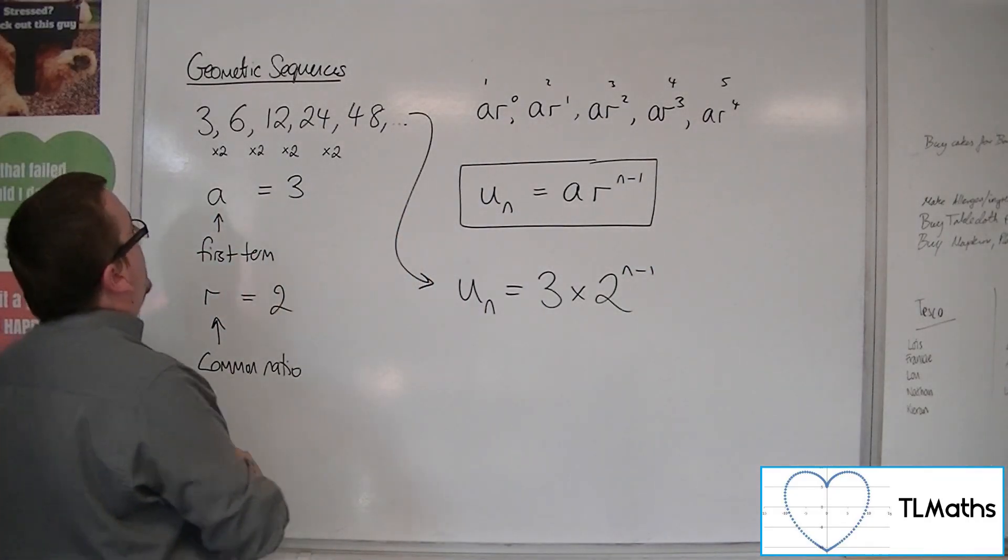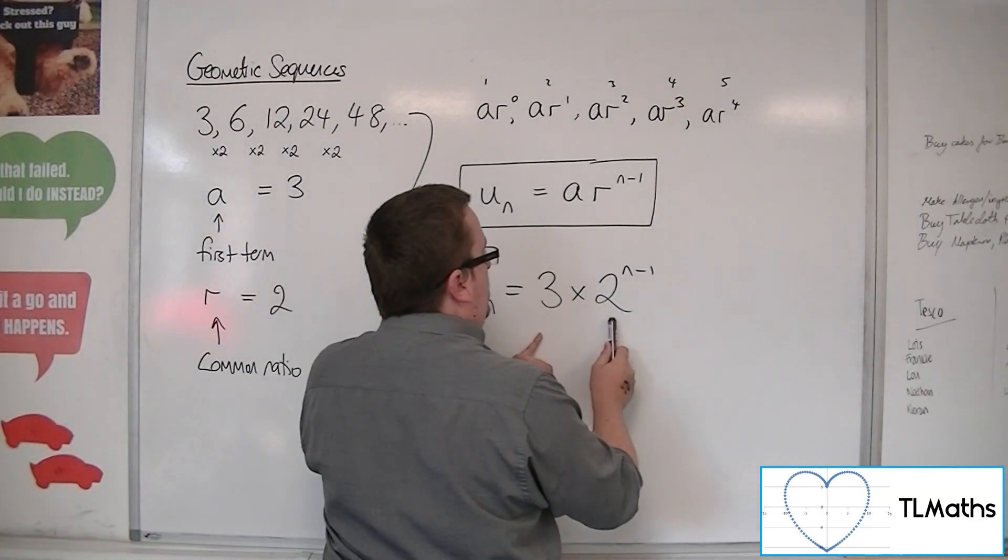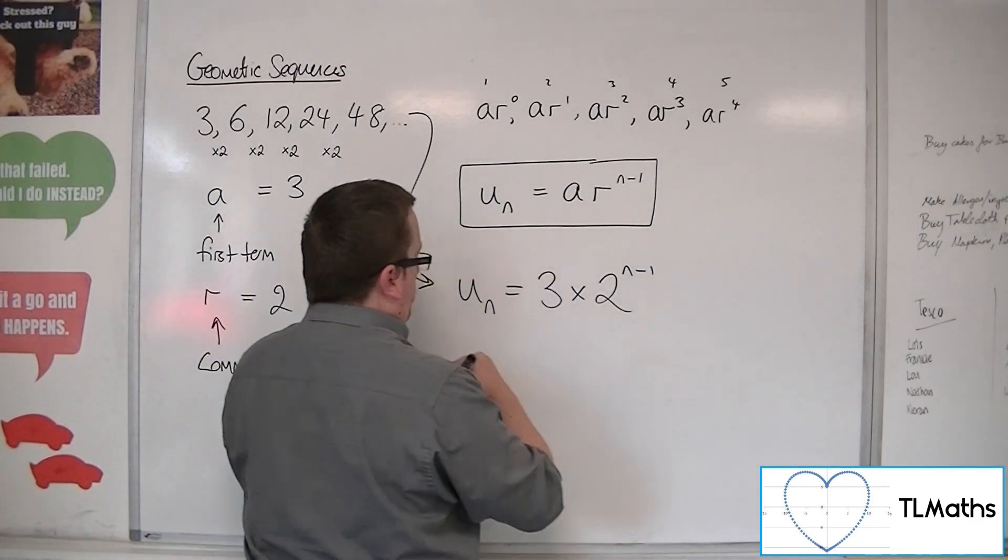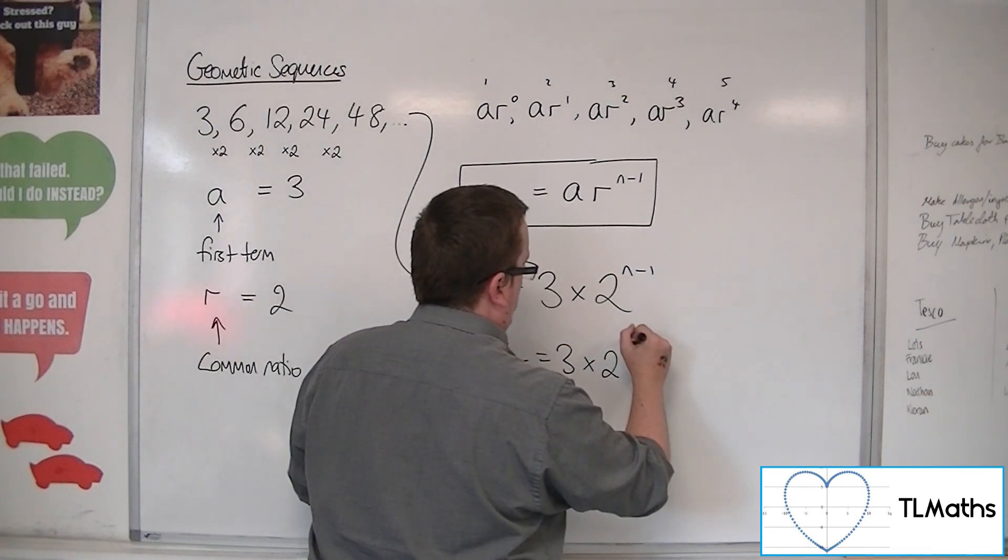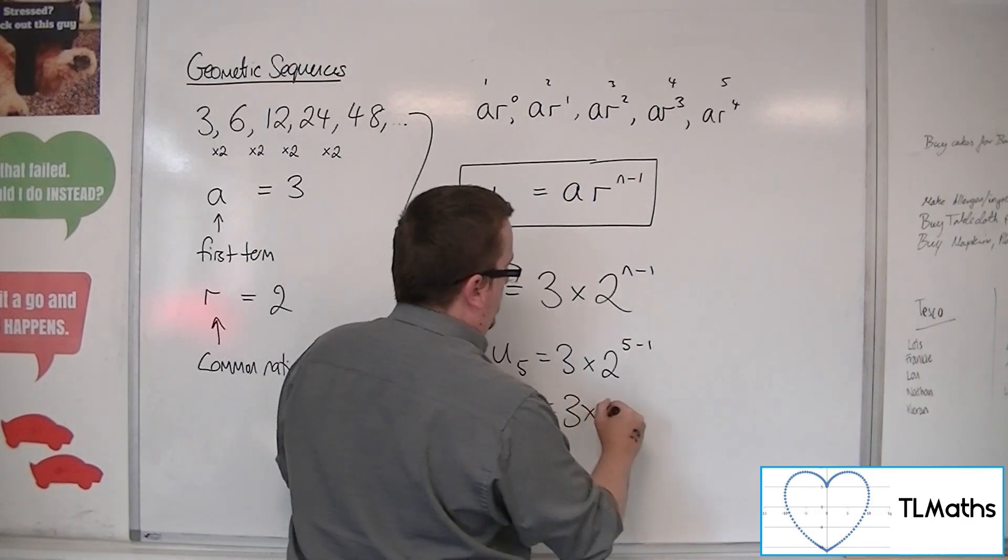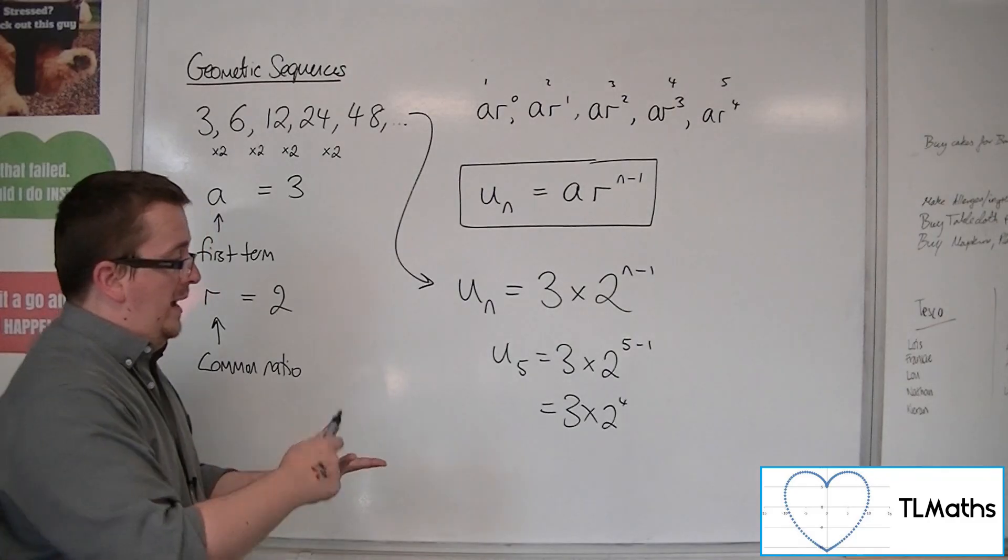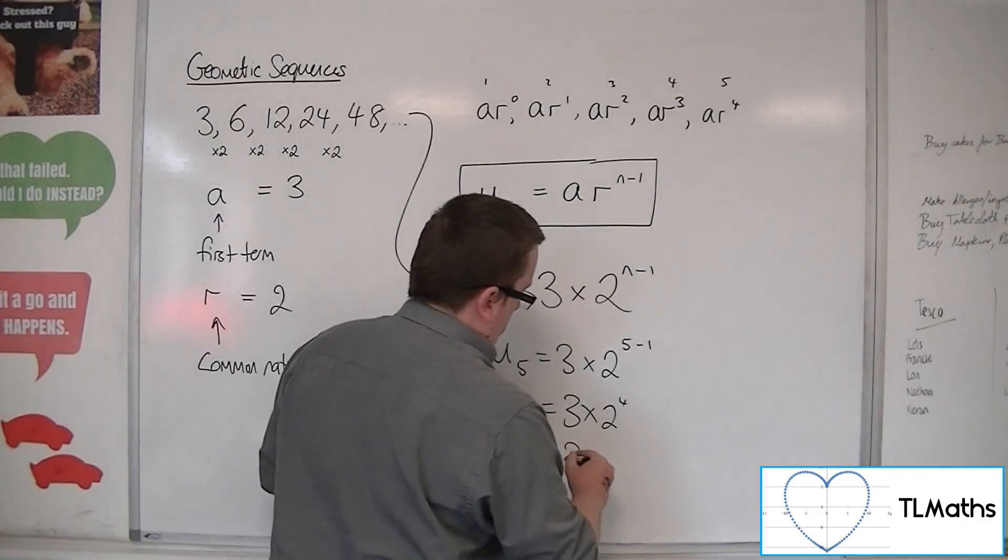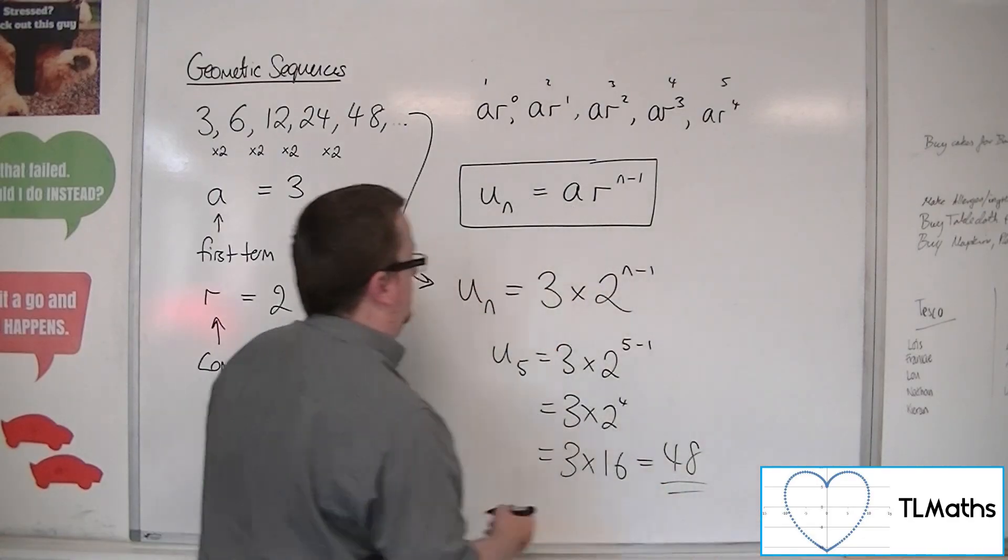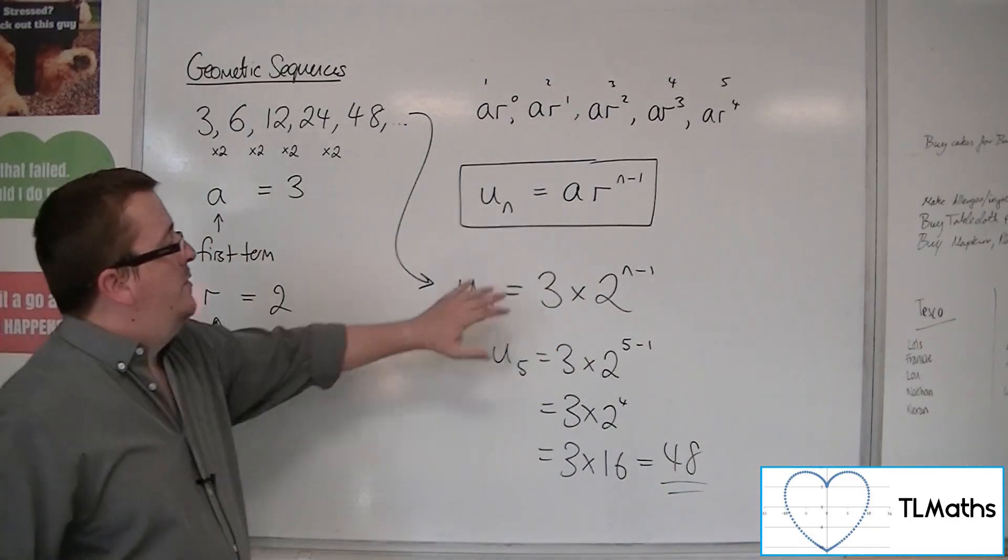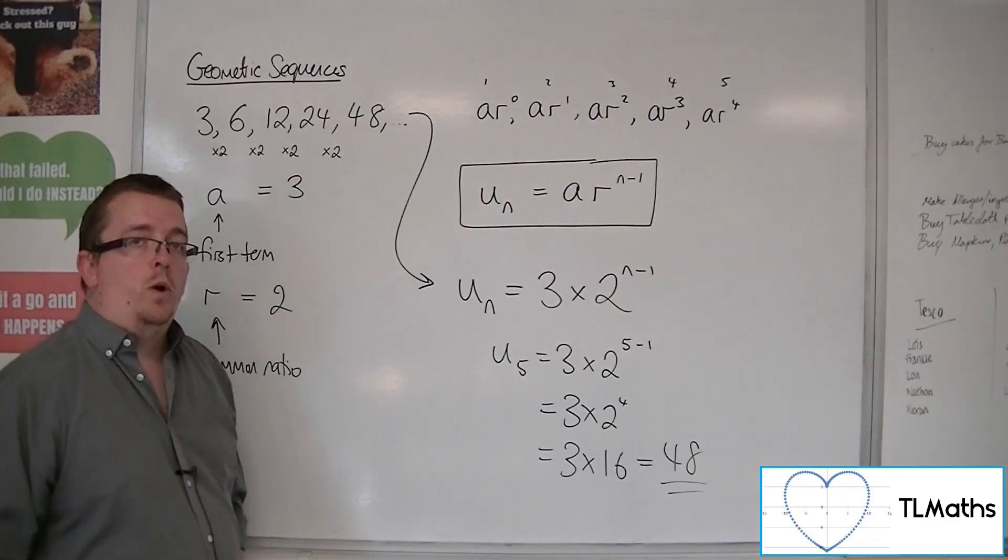And so if you try and check, so with the 5th term, for example, you've got 3 times 2 to the 5 minus 1. So 5 minus 1, so 3 times 2 to the 4. Now 2 to the 4 is 2, 4, 8, 16, which makes you 48. OK, and so this nth term generates this sequence as required.